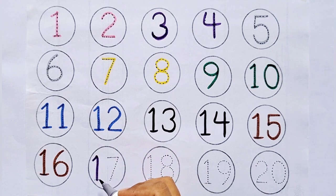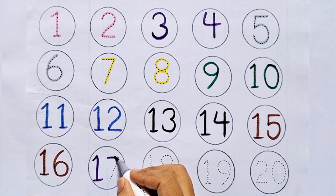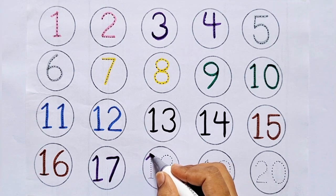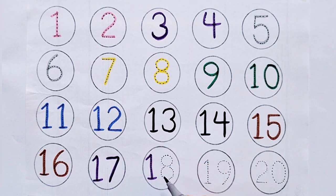17. 1-7, 17. After 16 comes 17. 18. 1-8, 18. After 17 comes 18.